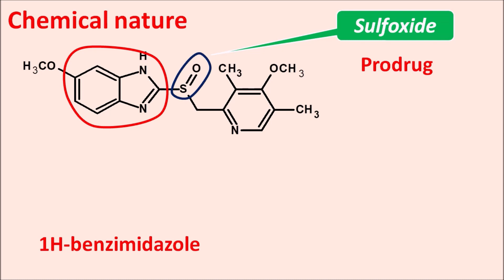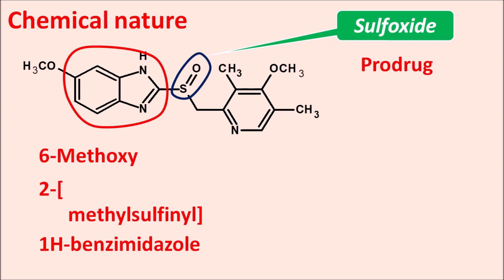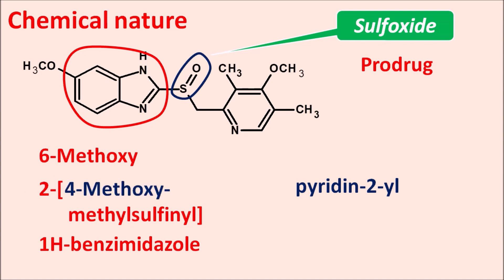We can identify the other chains: at the sixth position there is a methoxy group (6-methoxy), and at the second position on the sulfoxide there is a methyl group attached (2-methylsulfinyl). To this methyl group, a pyridine ring system is attached at the second position (pyridin-2-yl). To this pyridine, a methoxy group is present at the fourth position (4-methoxy), and methyl groups are at the third and fifth positions (3,5-dimethyl). That is the complete name of S-omeprazole.